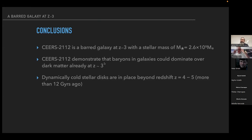Thank you very much for a very interesting talk. Let me ask you something: when we speak about masses, we're speaking about the stellar masses — the disk masses, the luminous component. Do we have some estimation of the total mass? For galaxies at large redshifts, when can we start speaking about having something like a rotation curve to estimate the dark matter component as well?